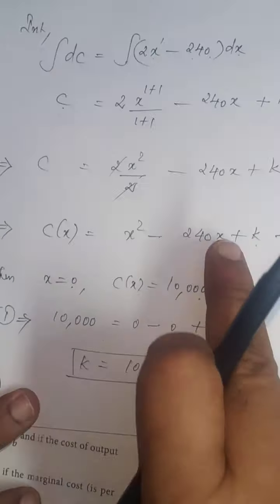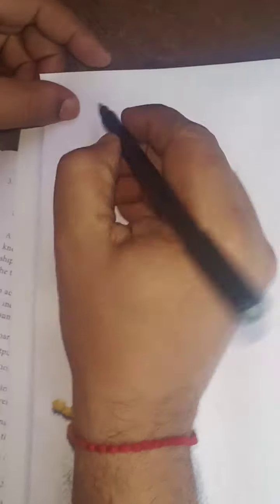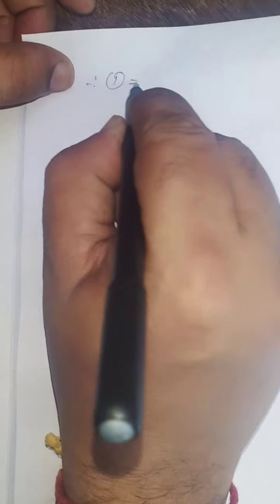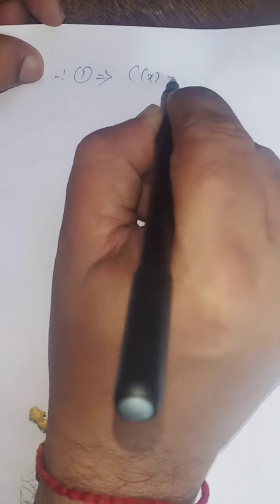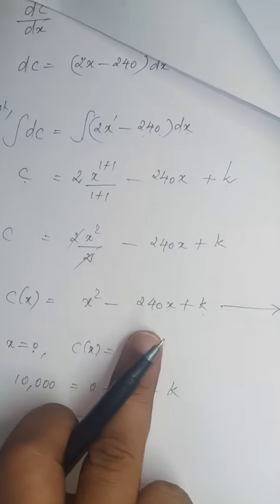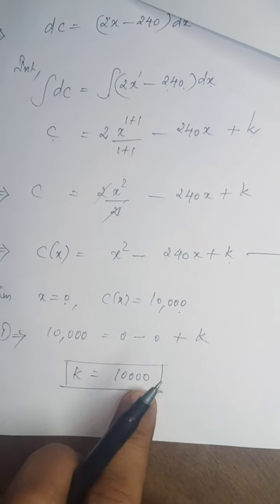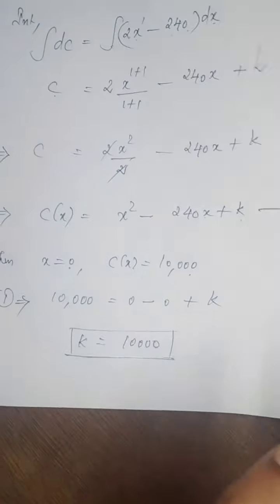Substitute the value of K in equation number 1. So, equation 1 implies therefore C of X equals X squared minus 240X plus K. K value 10,000. So, X squared minus 240X plus 10,000.